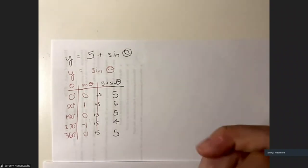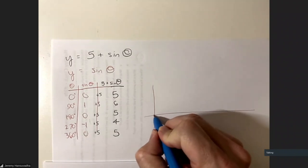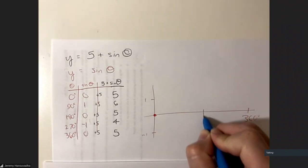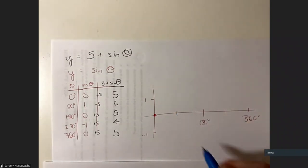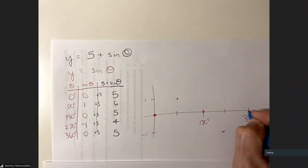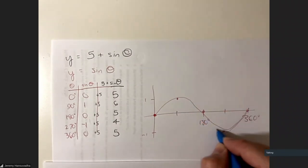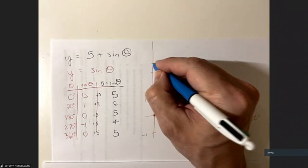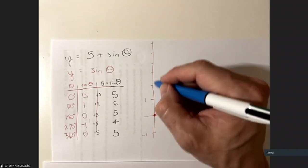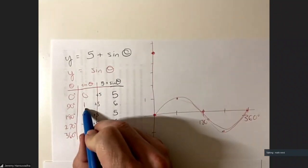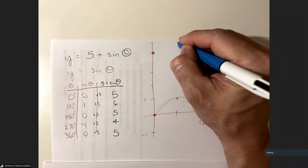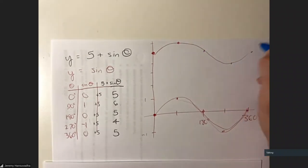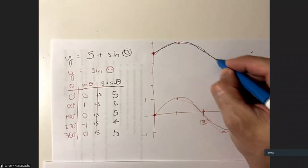So the graph is shifted upward. Instead of passing through points like 0,0 and 90,1, we're now going through 0 comma 5, 90 comma 6, 180 comma 5, 270 comma 4, and 360 comma 5. Those points are all way up on the graph — for example, 90 comma 6 is up at height 6. The shape is the same wave, just shifted up by 5.